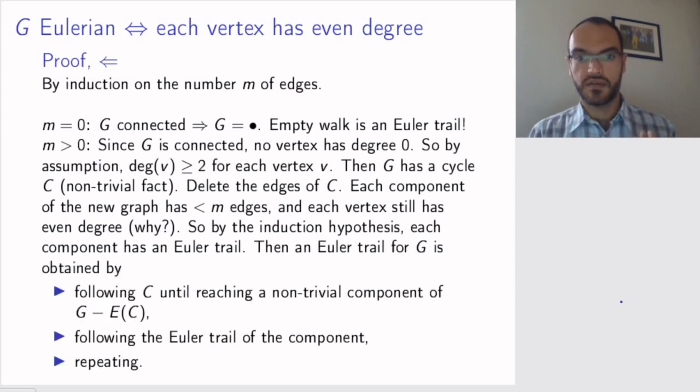And then I can combine these Euler trails from my small components to a large Euler trail, including all the edges of the graph as follows. I follow the cycle I deleted until I reach a non-trivial component. Then I follow the Euler trail of that component. Coming back to the cycle, I move on to the next non-trivial component and so on until I'm through with the graph.